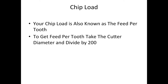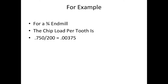The next thing we want to know is our chip load, also known as the feed per tooth. To get the feed per tooth, simply take your cutter diameter and divide it by 200. For example, a 3/4 inch end mill: 0.75 divided by 200 gives us 0.00375.